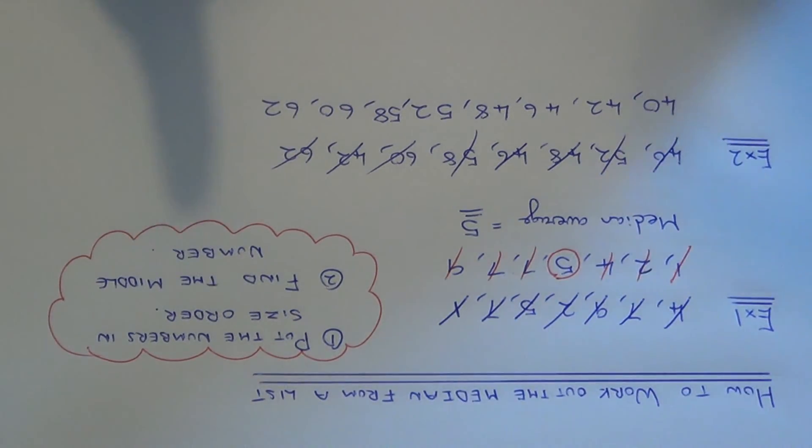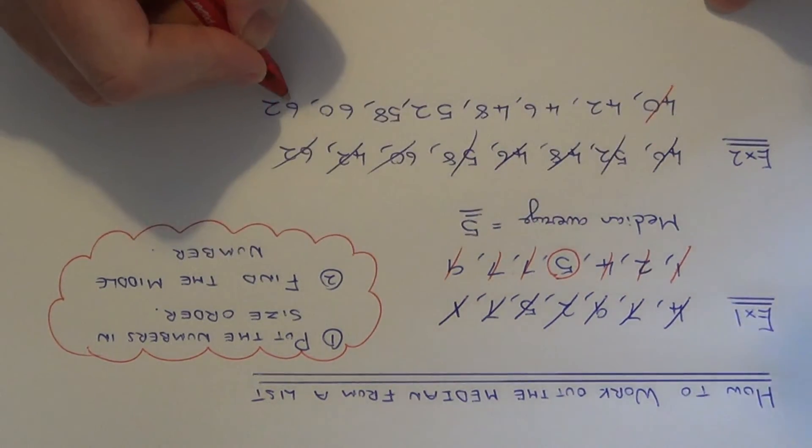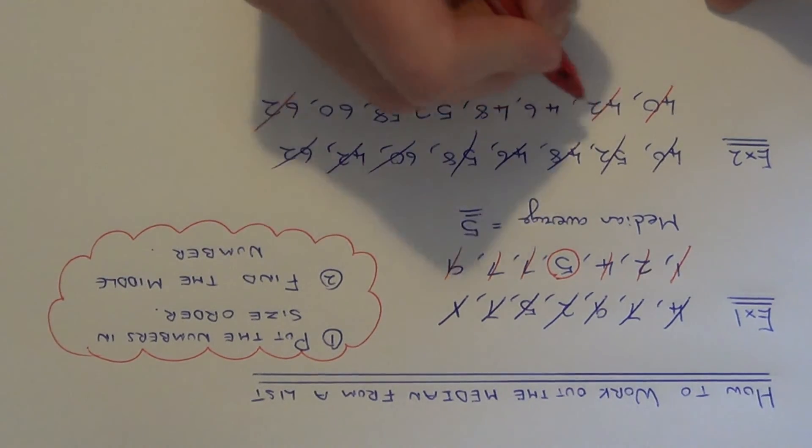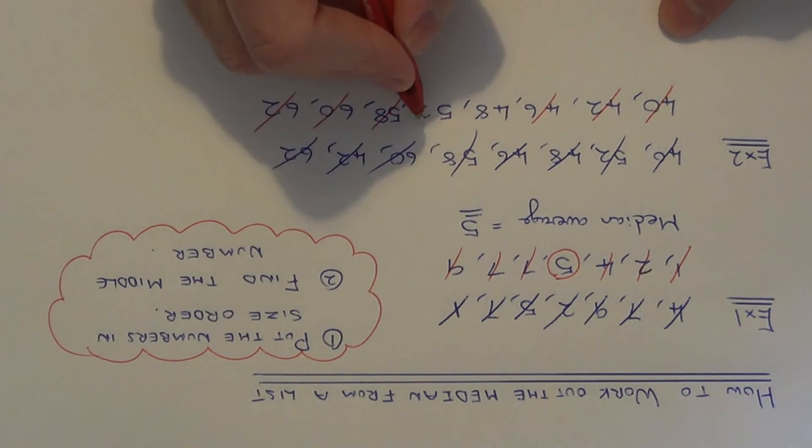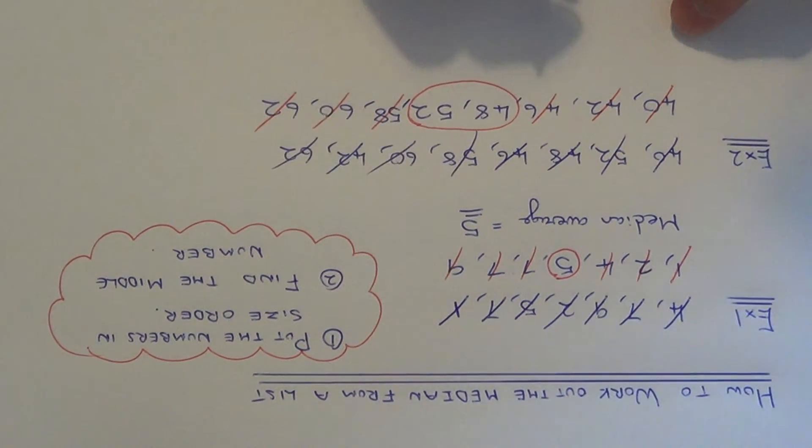So let's cross them out either side until we get to the middle number. Right, here then we've got two numbers left in the middle this time. So what you have to do is find the middle of these two numbers. So the number in the middle of 48 and 52 would be the number 50.